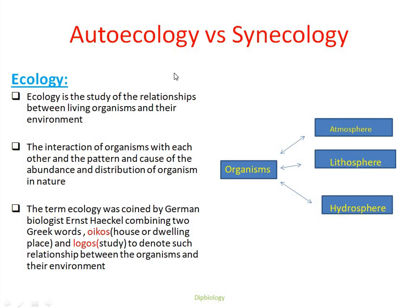Based on ecological hierarchy or levels of organization, ecology can be broadly divided into two types: one is Auto-ecology and the other one is Syn-ecology. So, ecology based on their hierarchy is of two types: one is Auto-ecology and the other one is Syn-ecology.